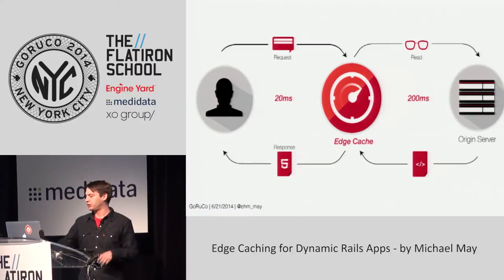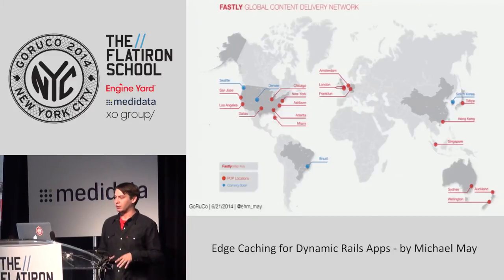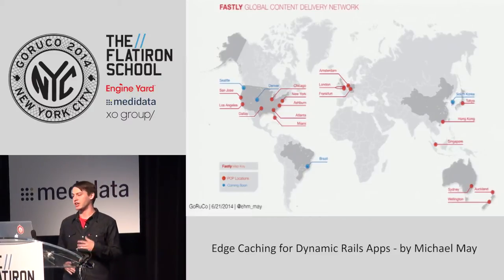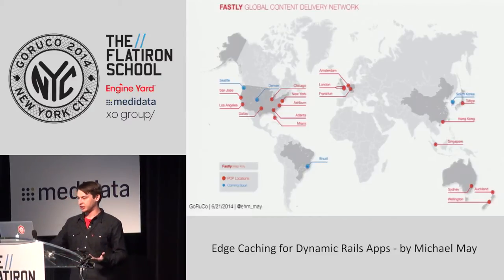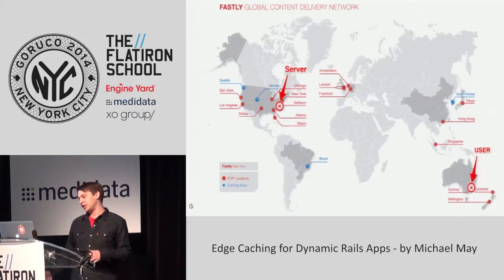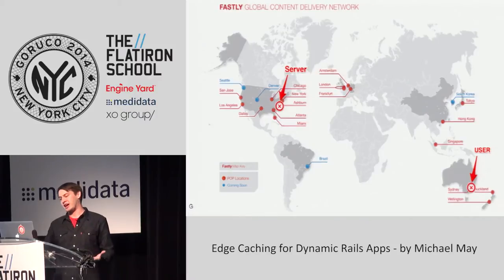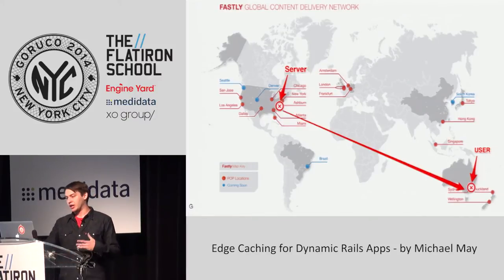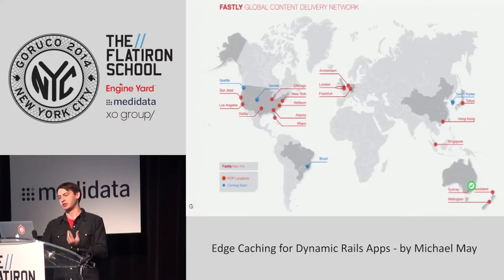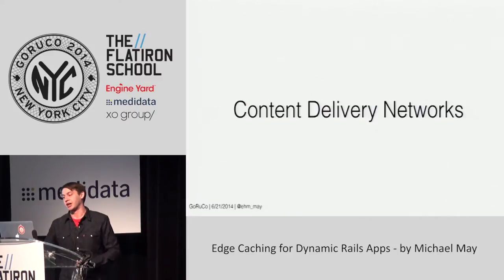We have edge caches all over the world — we call these POPs, which stands for Points of Presence. Say you have a user in Sydney, Australia, and your application server is in Ashburn, Virginia. There are many thousands of miles between them, so it takes a long time for data to travel. The whole idea behind content delivery networks is to offload as much data as possible from the application server and put it somewhere closer to the user.